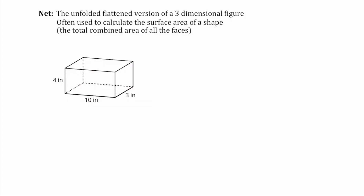When dealing with 3D shapes, we often make something called a net. A net is the unfolded, flattened version of a three-dimensional figure, often used to calculate the surface area of a shape. The surface area is just the total combined area of all the faces. When drawing a net, generally we start by thinking about one of the sides — usually I like to start with the base, so our base here is this 10 by 3.